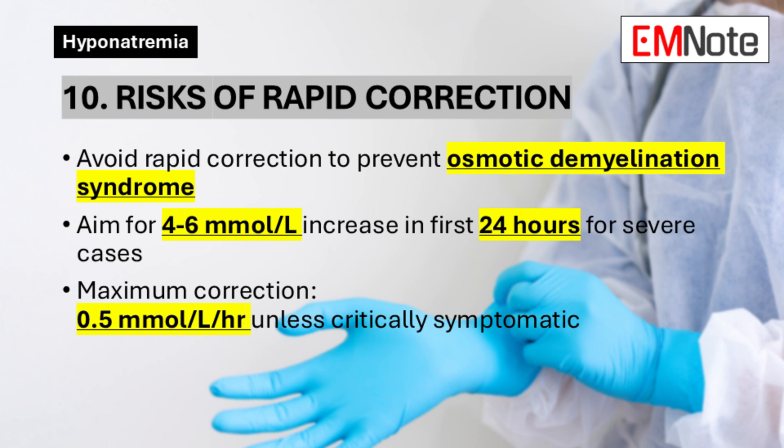Point 10: Risks of Rapid Correction. Overly rapid correction of chronic hyponatremia can lead to osmotic demyelination syndrome. To prevent this, sodium correction should be gradual, aiming for an increase of 4 to 6 millimoles per liter in the first 24 hours for severe symptomatic cases. For chronic symptomatic cases, correction by 10 millimoles per liter per day is recommended. In general, the sodium level should not be corrected faster than 0.5 millimoles per liter per hour unless the patient is seriously symptomatic. Some experts recommend a maximum correction of 8 millimoles per liter per day.